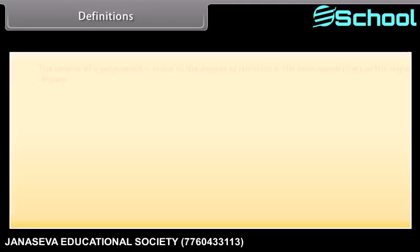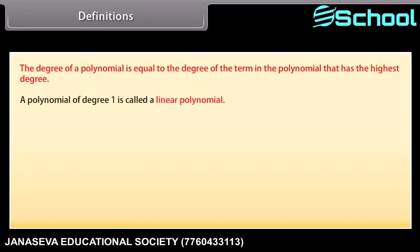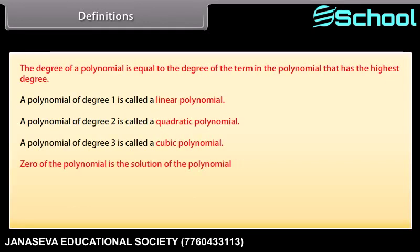Definitions: The degree of a polynomial is equal to the degree of the term in the polynomial that has the highest degree. A polynomial of degree 1 is called a linear polynomial. A polynomial of degree 2 is called a quadratic polynomial. A polynomial of degree 3 is called a cubic polynomial. The zero of the polynomial is the solution of the polynomial.